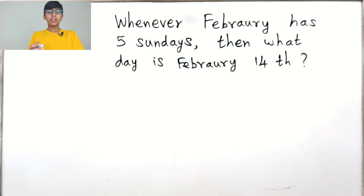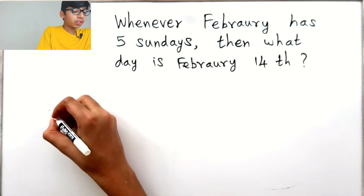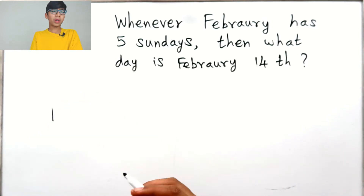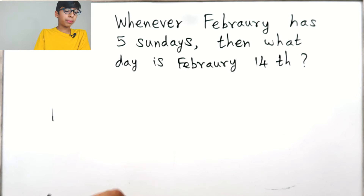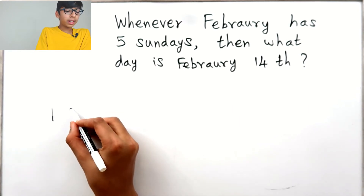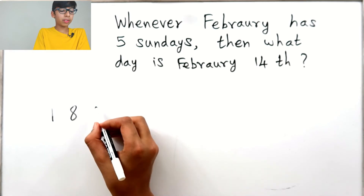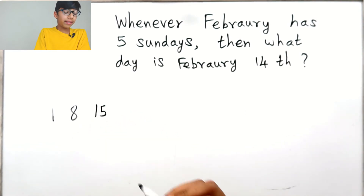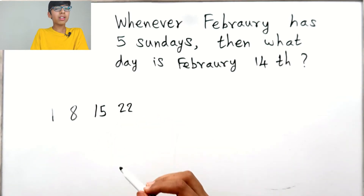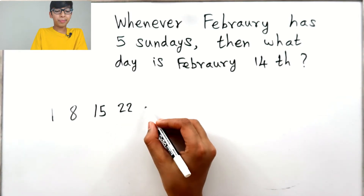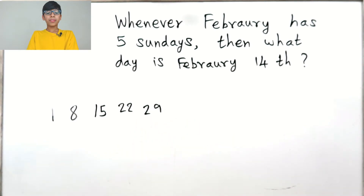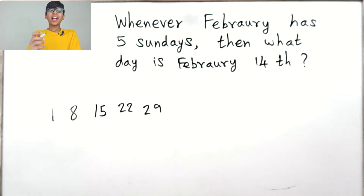So let's say Sunday is on February 1st. Does Sunday have to be on February 1st to have five Sundays in February? If Sunday is on February 1st, the next Sunday would be February 8th, then February 15th, then February 22nd, then February 29th. In a leap year, February has 29 days, so February must have Sunday as its first day to have five Sundays.